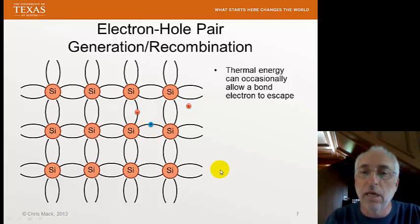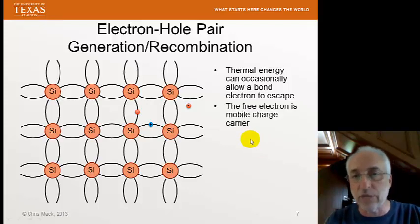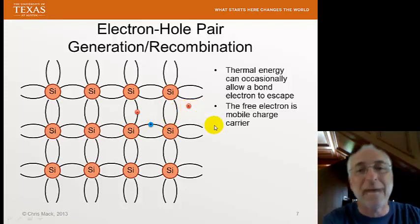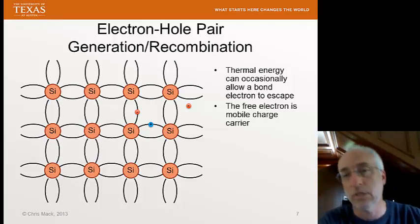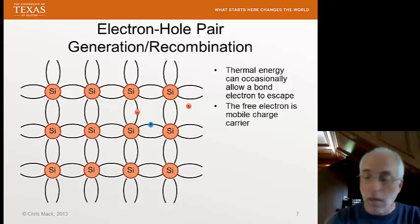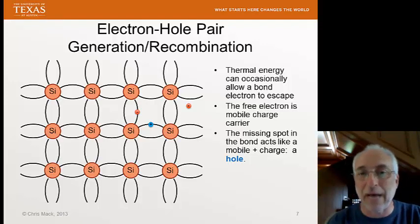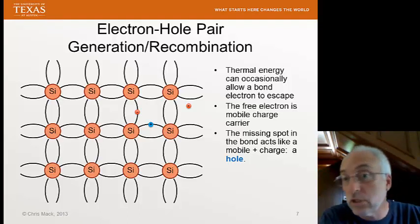The electron that we generated by adding this thermal energy that came out of the bond is free. It is no longer bound to a silicon. And that free electron is mobile. If we apply an electric field, it'll move. It'll carry a current. And the mobile charge carriers are going to be the thing we keep track of to understand the electrical properties of our semiconductor material. But here's the interesting thing. That plus charge that came about from removing the electron is also mobile. It can move around just like the electron can.